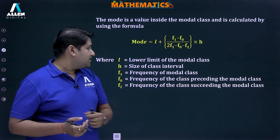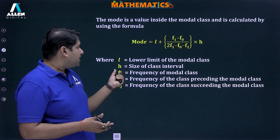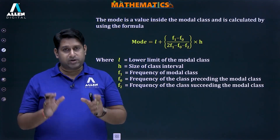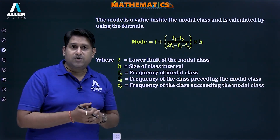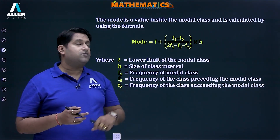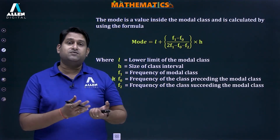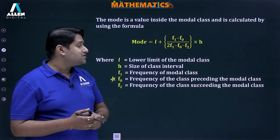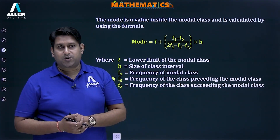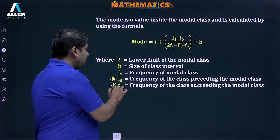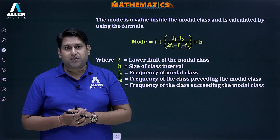In this formula, l is the lower limit of the modal class, h is the class size or class width, f1 is the frequency of the modal class, f0 is the frequency of the class preceding the modal class, and f2 is the frequency of the class succeeding the modal class. These terms are very important and must be memorized properly.